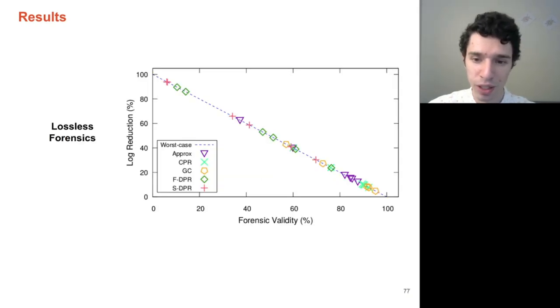Underneath the lossless forensic metric, no technique can do better than the worst case. This is intuitive, as the lossless metric assumes that every dropped event is a loss in utility.